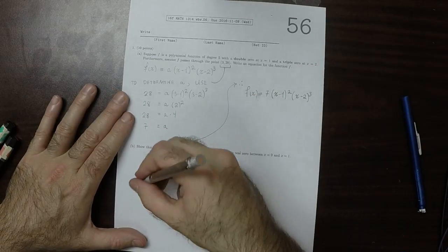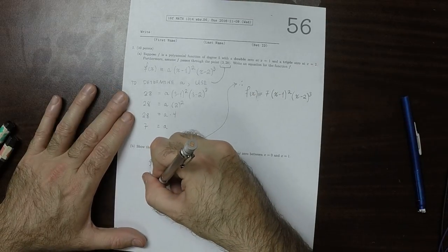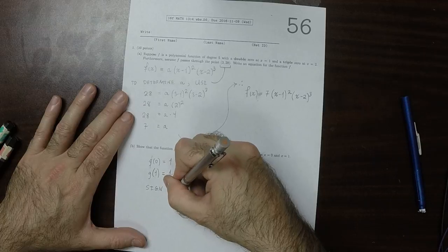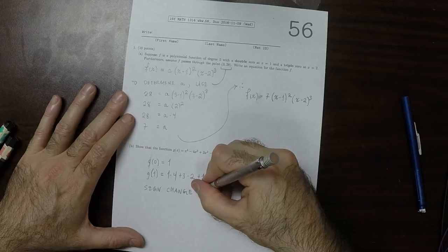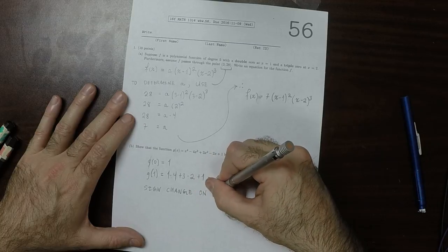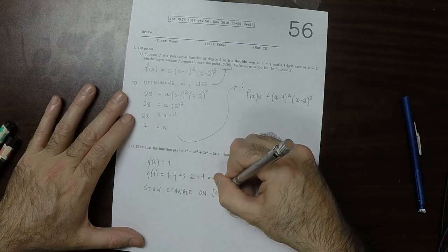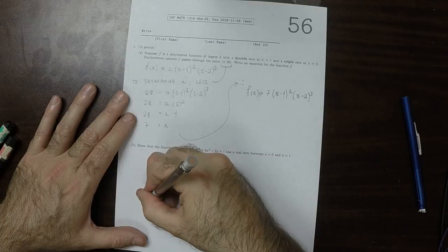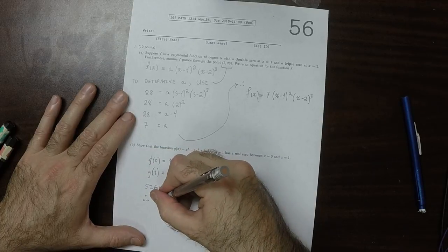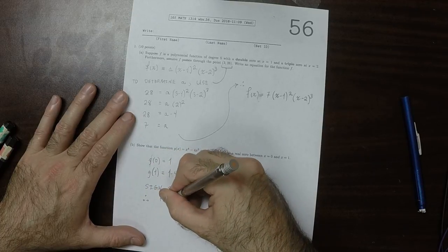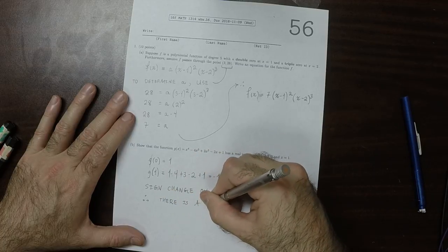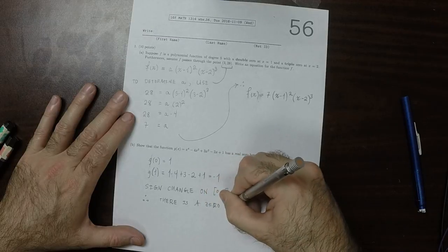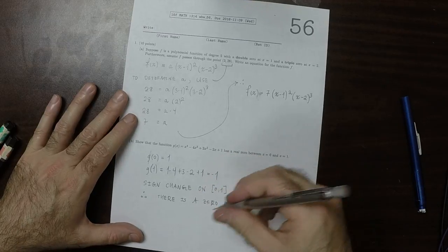So there's a sign change on the interval 0 to 1. And therefore, there must be a zero on 0 to 1.